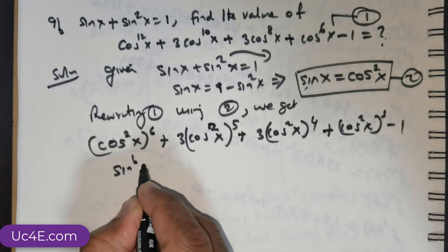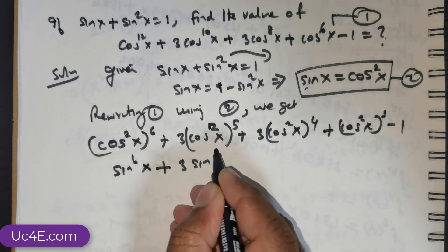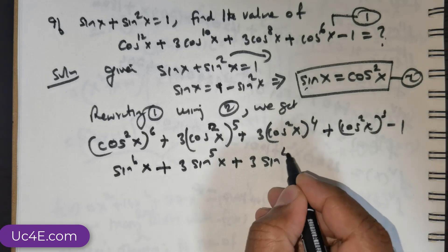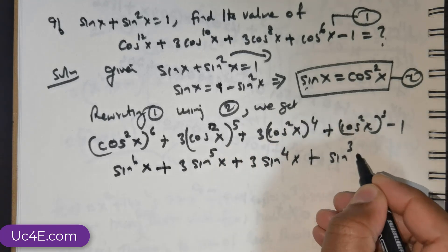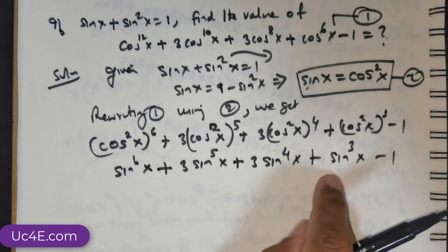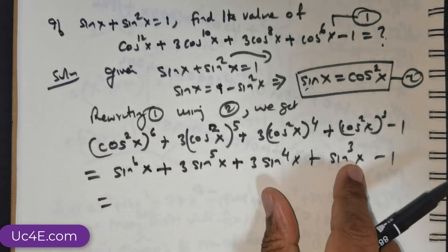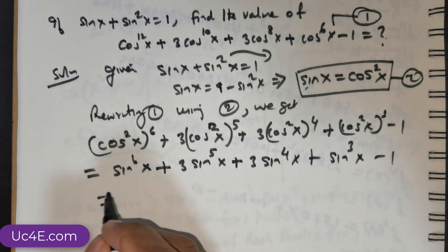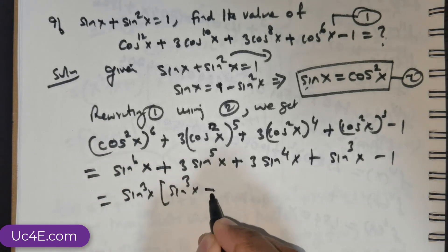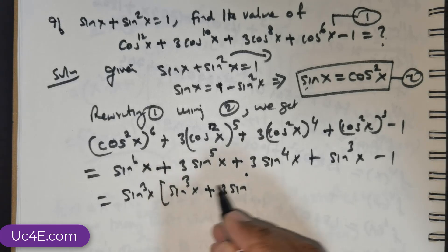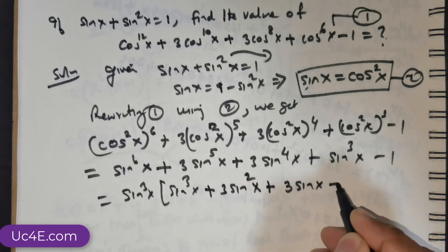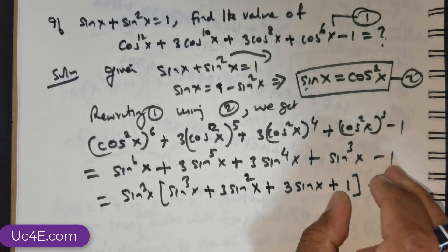So this is going to be sin⁶x + 3 times sin⁵x + 3 times sin⁴x + sin³x − 1, since cos²x = sin x. Simplifying further, we get sin⁶x + 3 sin⁵x − 1.